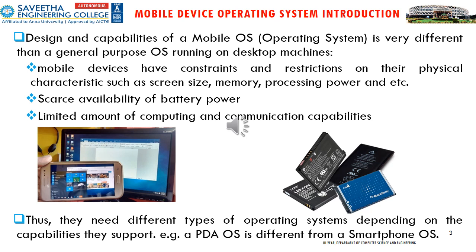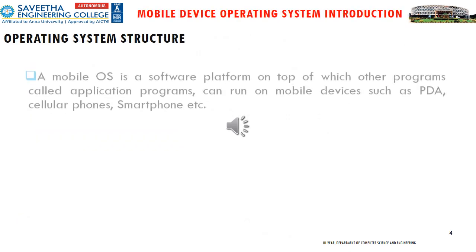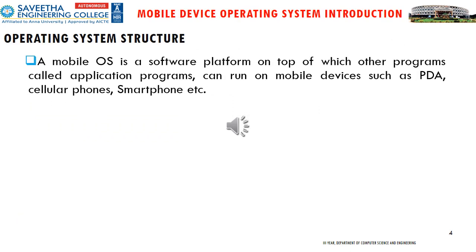A PDA OS is different from a smartphone OS. Now we will see the operating system structure of a mobile phone. A mobile OS is a software platform on top of which other programs, called application programs, can run on mobile devices such as PDA, cellular phones, and smartphones.